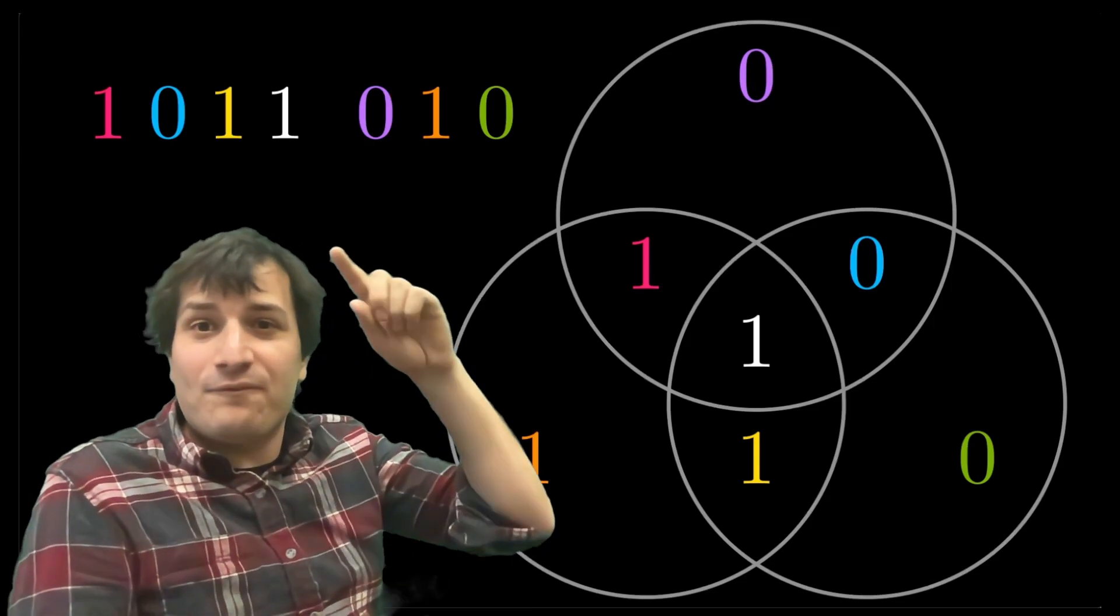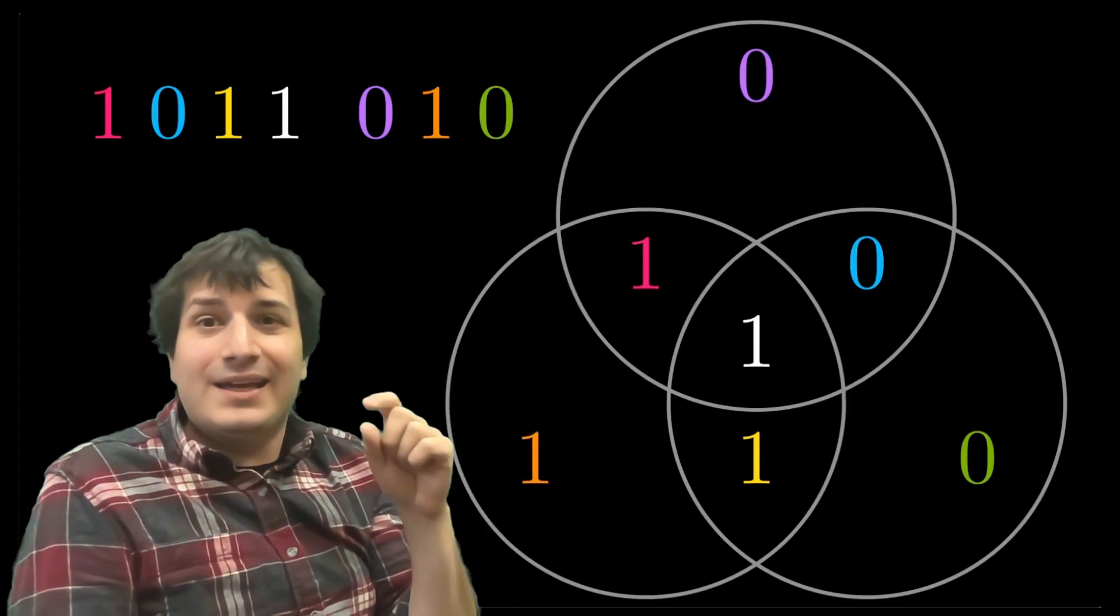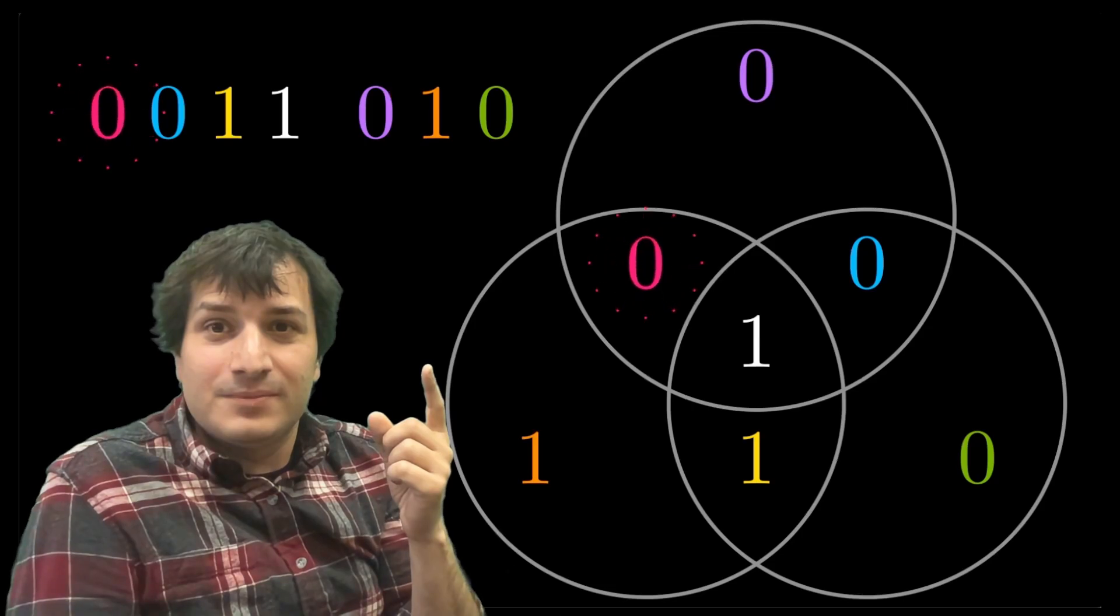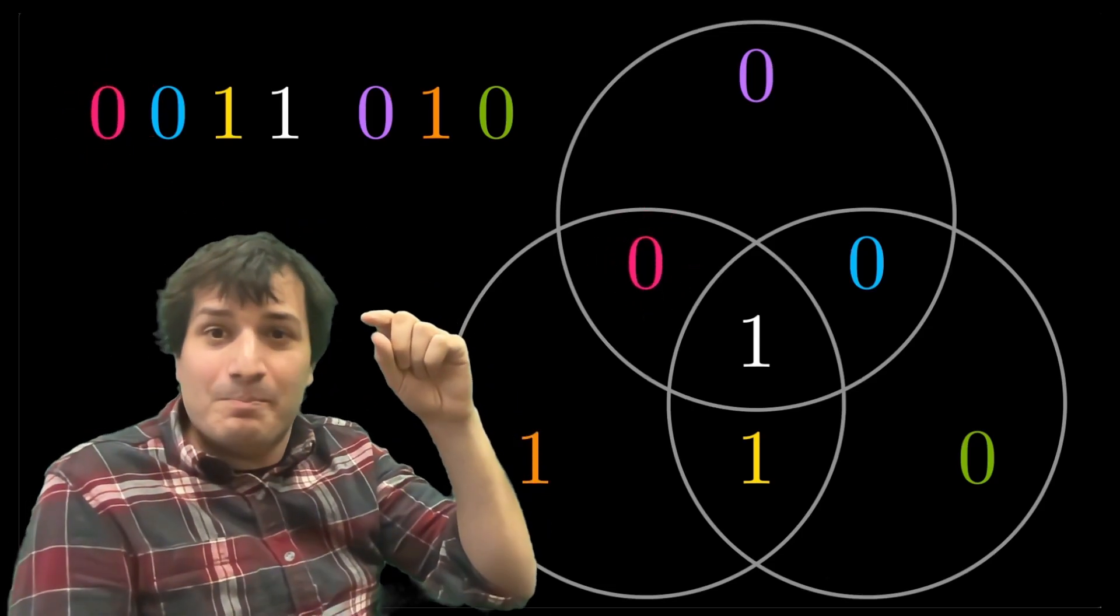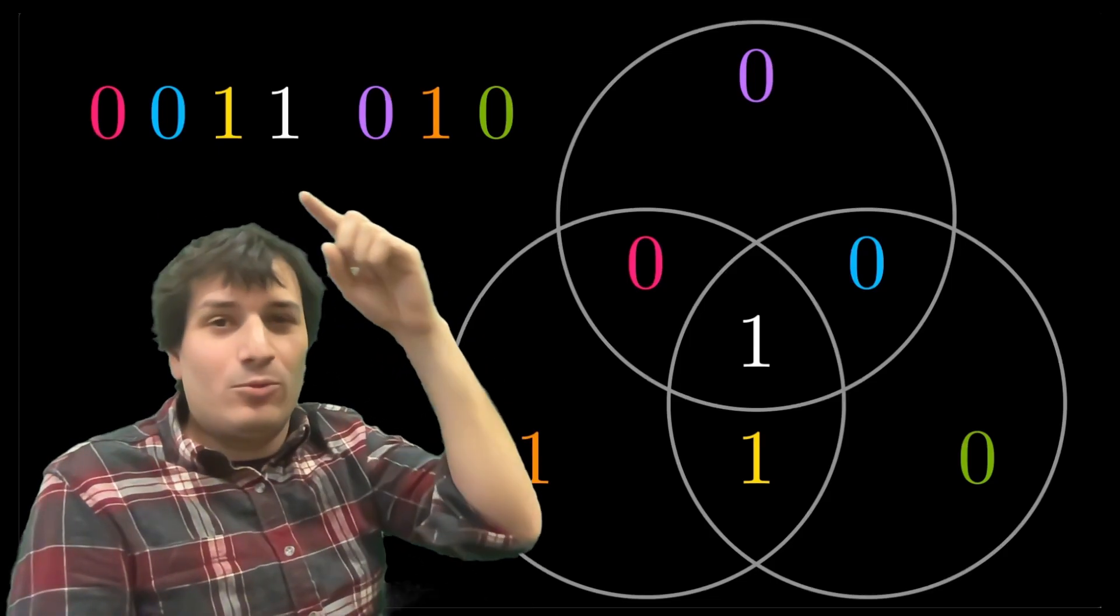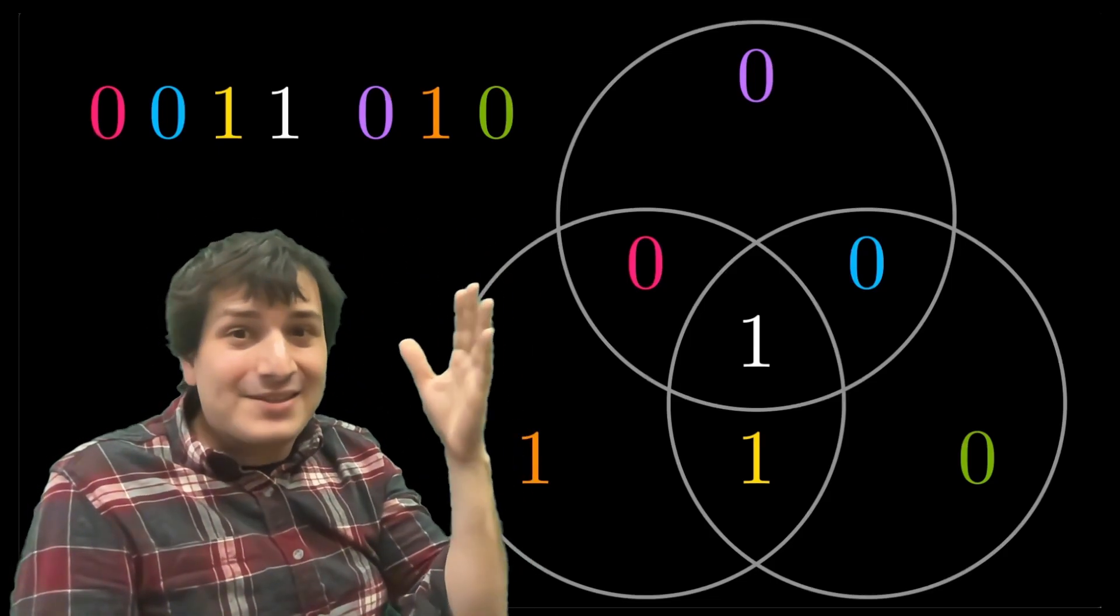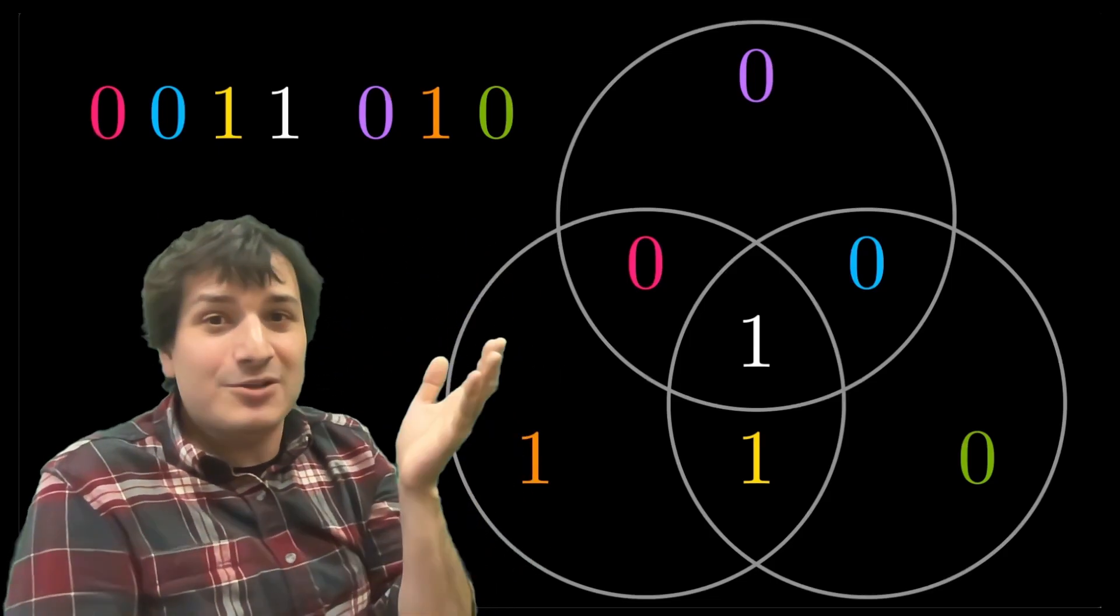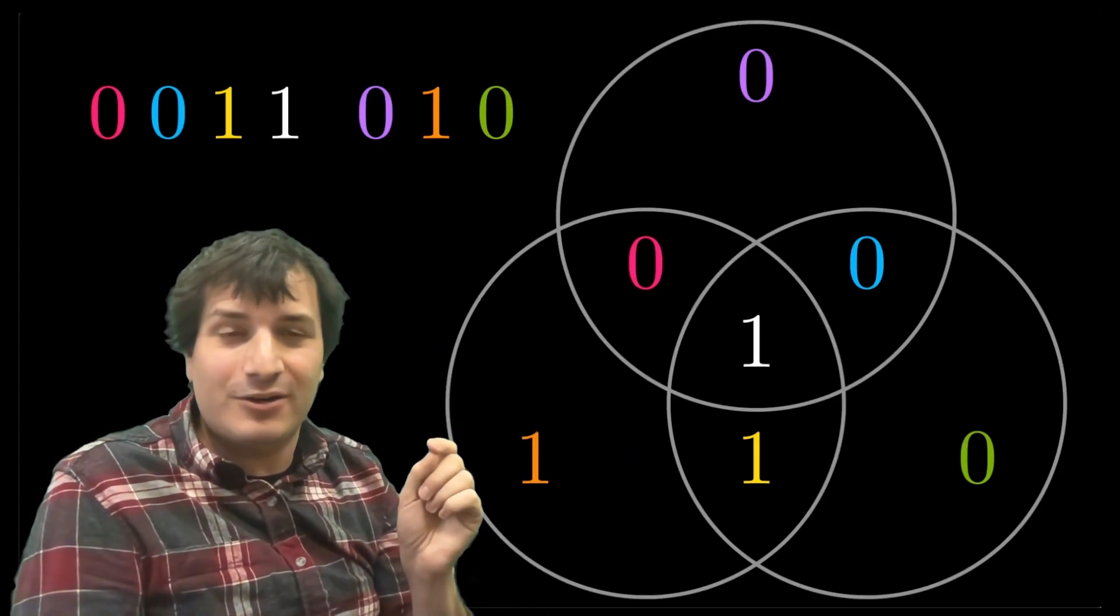Let's pretend, for example, that the first bit that that red one over there gets flipped. So it got flipped to a zero. So Alice meant to send one zero one one zero one zero, but Bob receives zero zero one one zero one zero. So Bob has the wrong message. How is Bob going to figure it out? Well, Bob draws the same circles that Alice did to figure it out.